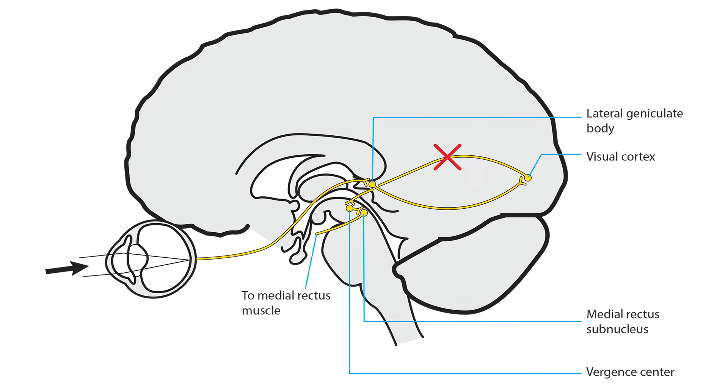Direct damage to descending pathways from the occipital lobe to the midbrain is the second way to alter the balance between convergence and divergence. The misalignment pattern will either be a comitant esotropia or exotropia. Eye movements will be of normal amplitude in all directions.